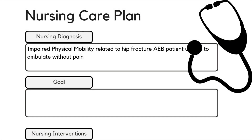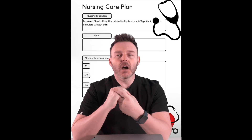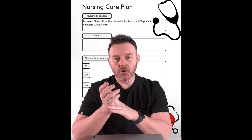We're going to use nursing diagnoses formulated using NANDA. The first one I want to talk about is impaired mobility. Our nursing diagnosis is: impaired physical mobility related to the hip fracture, as evidenced by patient unable to ambulate without pain. That's our first nursing diagnosis.